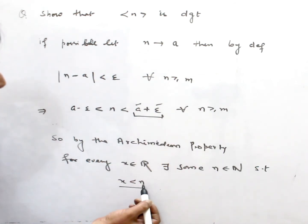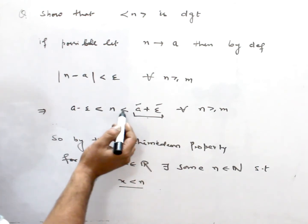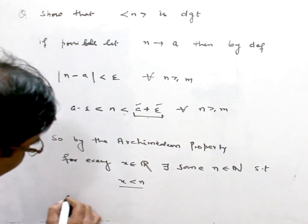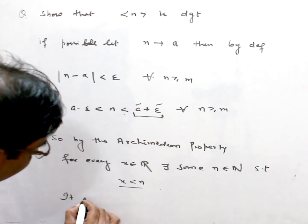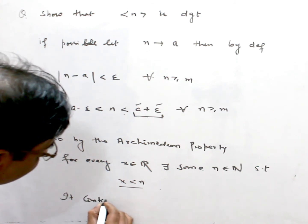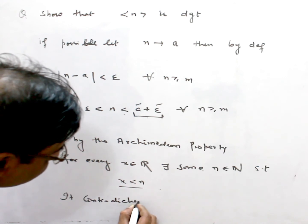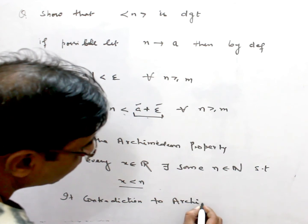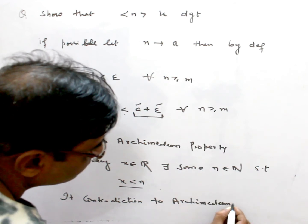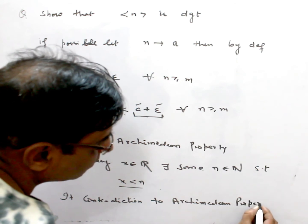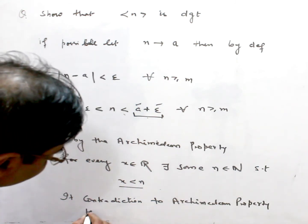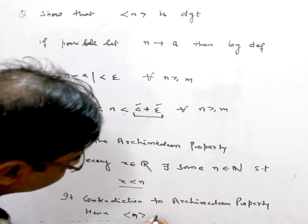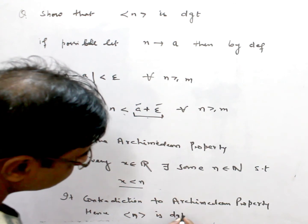So here, what is happening? The real number is larger than the natural number. So it is a contradiction to the Archimedean property. Hence, n is divergent.